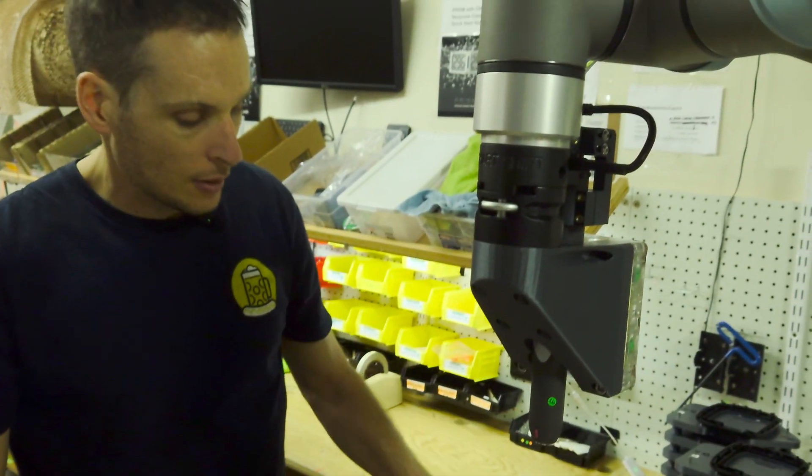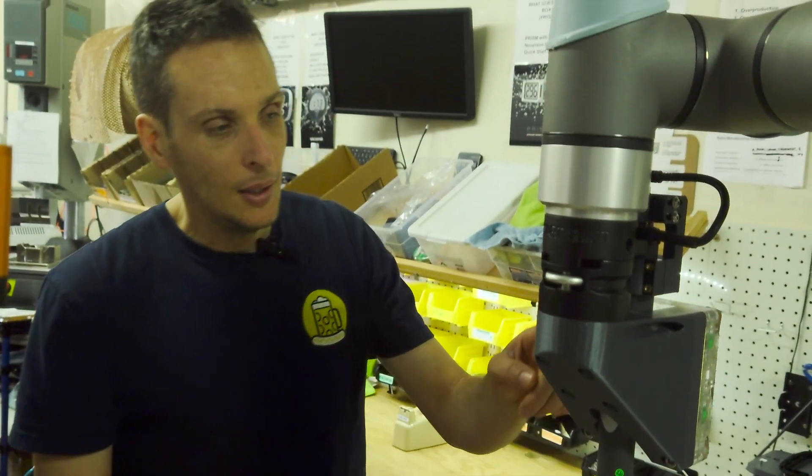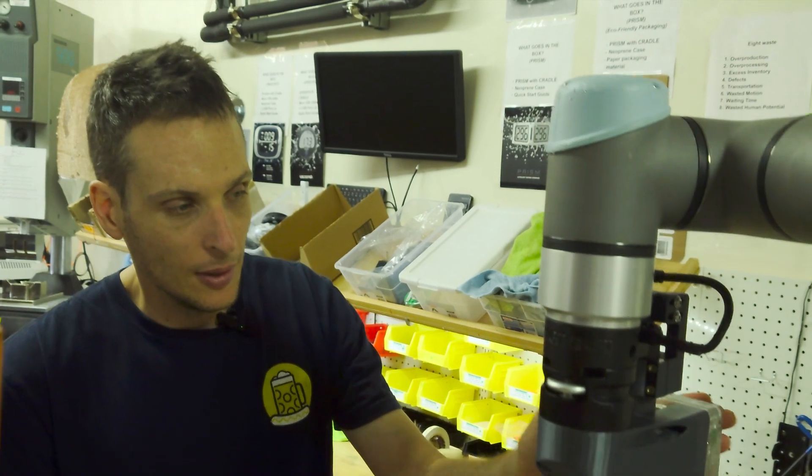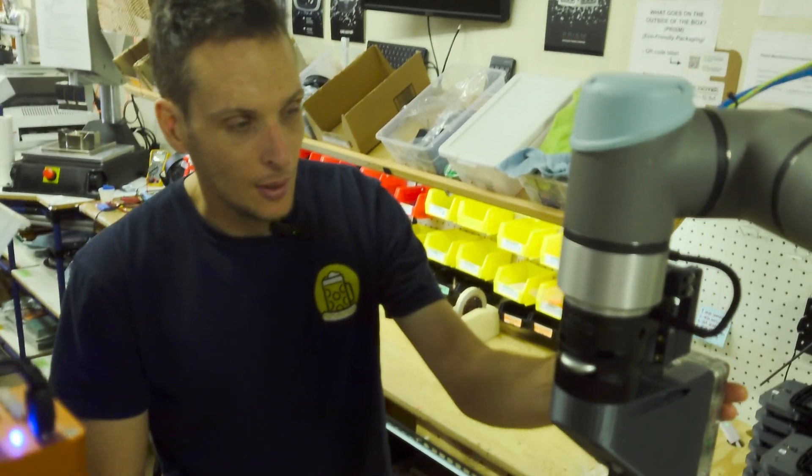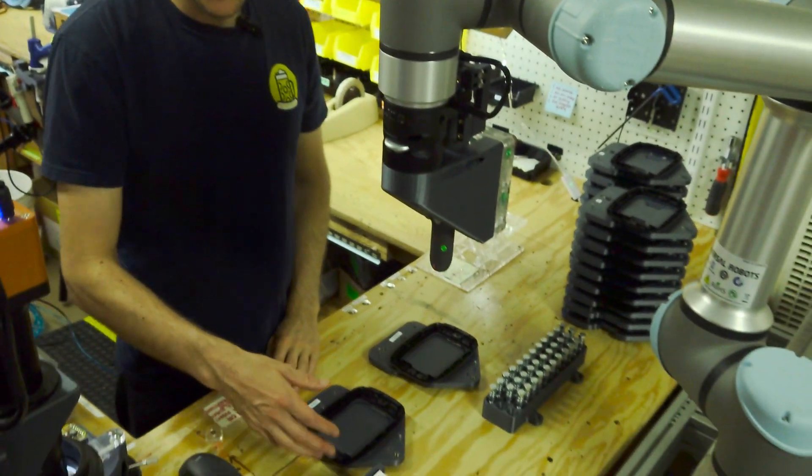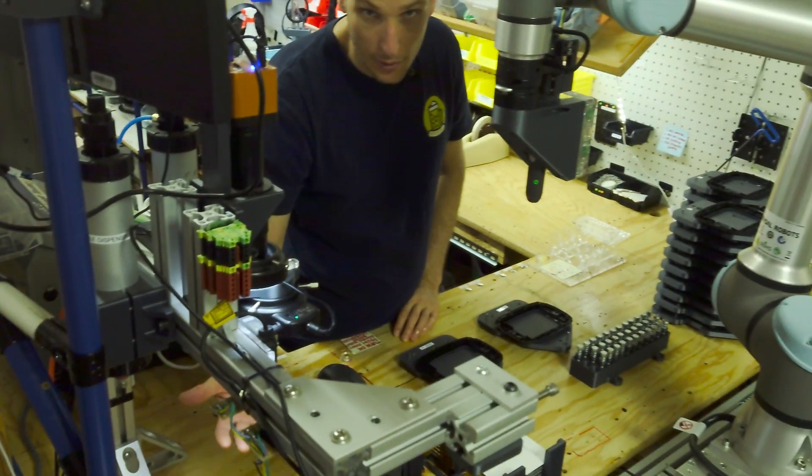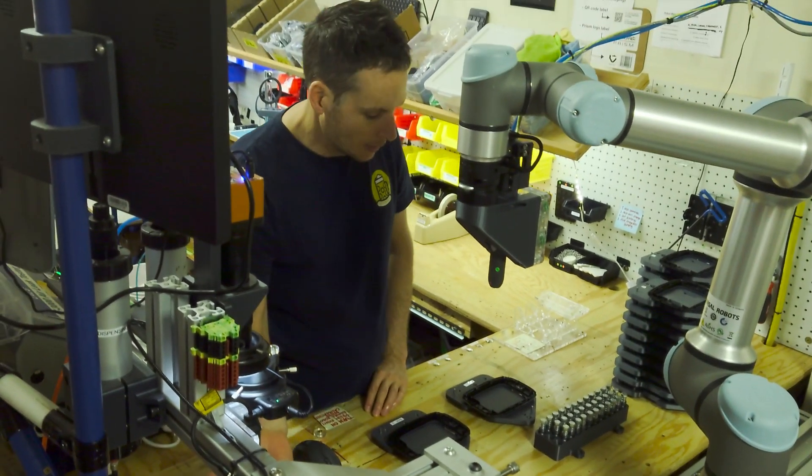So the Corona treater is going to Corona treat the plastic. Once that's done, it's going to this side of the tool here, the suction cups are going to pick up an LCD, and then they're going to take it over here, and we're going to put glue on the LCD.